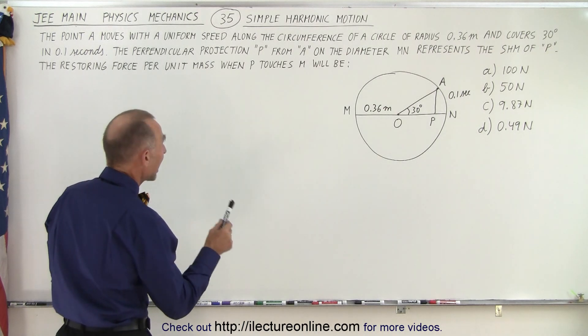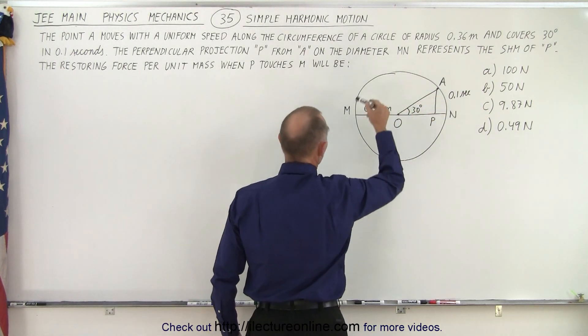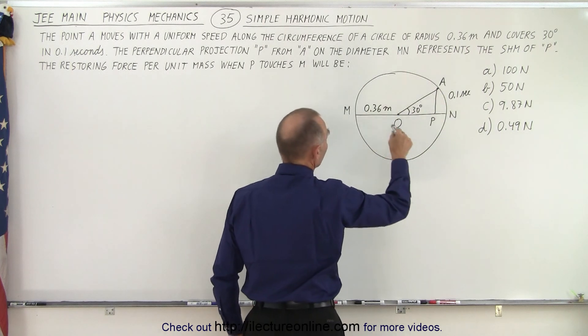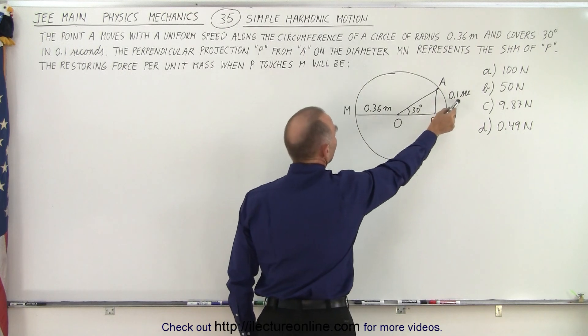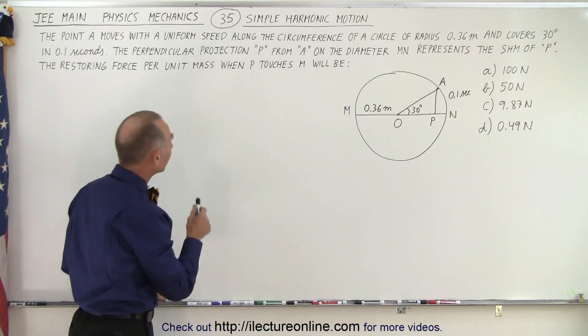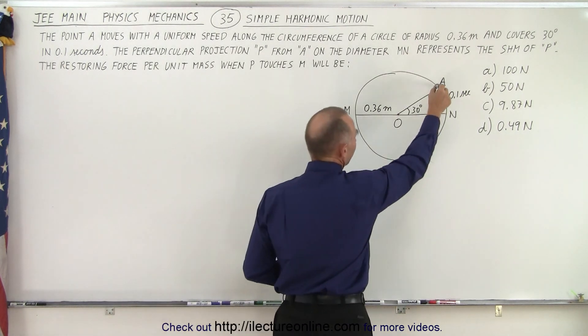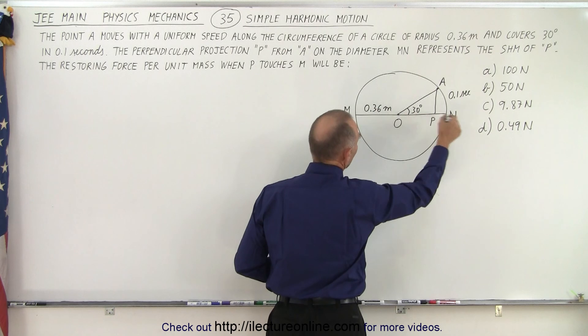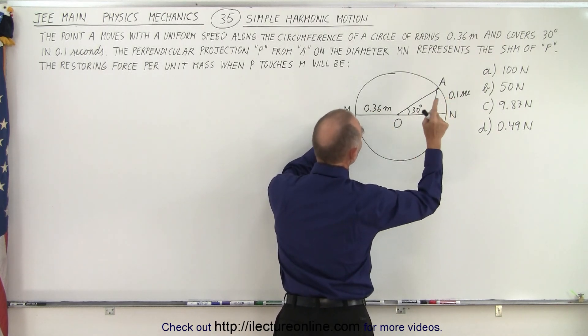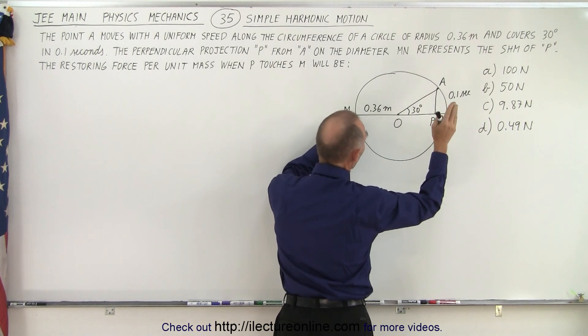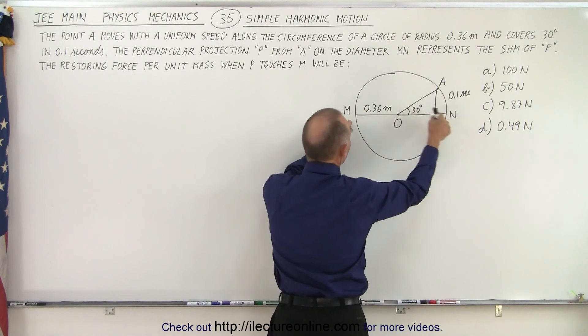It says here that point A, which is right here, moves with a uniform speed along the circumference of a circle of radius 0.36 meters and covers an angle of 30 degrees in 0.1 seconds. The perpendicular projection P from A on the diameter, so we have the projection of A onto P, the diameter line right here, from M to N represents the simple harmonic motion of P. So P, as A goes around the circle, will go back and forth between M and N.